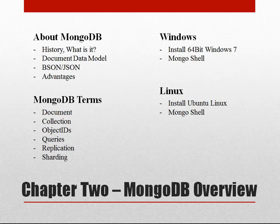In chapter two we'll focus on MongoDB specifically. We'll talk about what it is, a little history, and we'll talk about the document data model that it uses as well as the BSON and JSON text formatting. We'll also cover the advantages of MongoDB and talk about important terms you need to know such as collection, sharding, replication, and object IDs. Then we'll go through the installation steps to install MongoDB on a Windows machine as well as Linux Ubuntu, and we'll take a quick look at the Mongo shell.